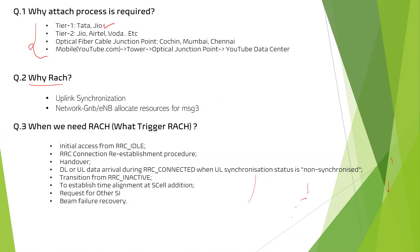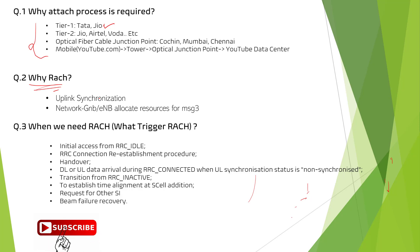Why is the RACH process required? For attaching to the network, the UE and network need to be synchronized with each other — if the network is transmitting, UE can listen; if UE is transmitting, the network can listen. For this synchronization, a platform is required. Here, UE and gNodeB listen to each other. A channel is allocated to the mobile. The network broadcasts something and the UE listens — this is called downlink synchronization.